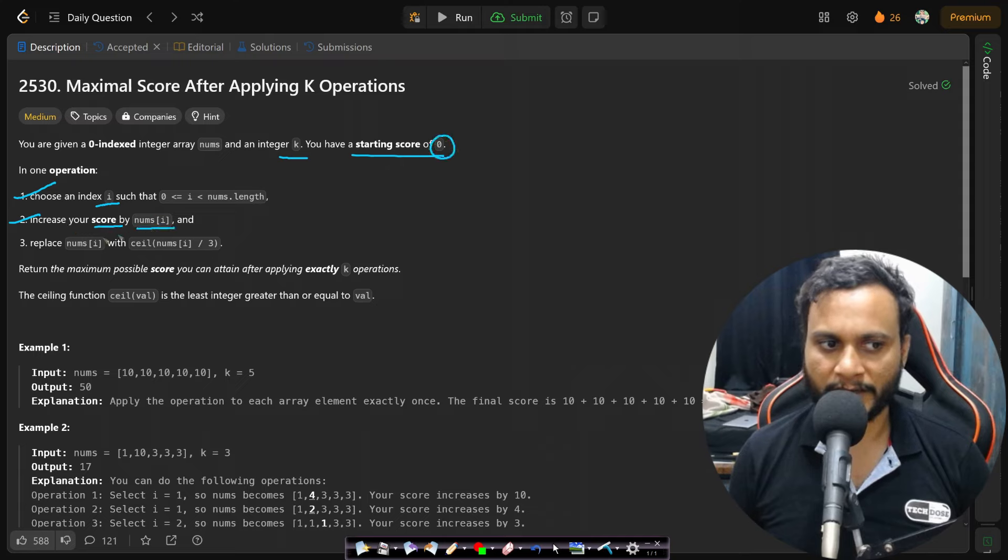We can add nums[i] and then we have to replace nums[i], which we had chosen in step one, and replace it by ceiling of nums[i] divided by 3.